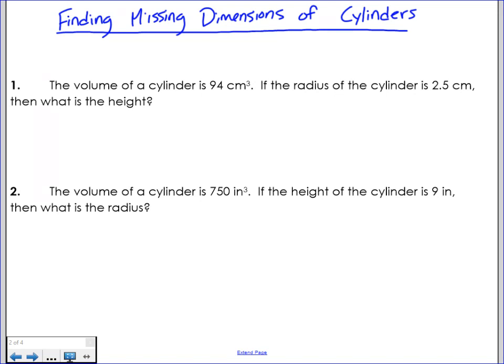The first thing that's really important is that we know the formula. We have to know that the volume of a cylinder is the area of the base times the height, more specifically pi r squared times height. If we don't know that formula, these questions are going to be basically impossible for us to solve.